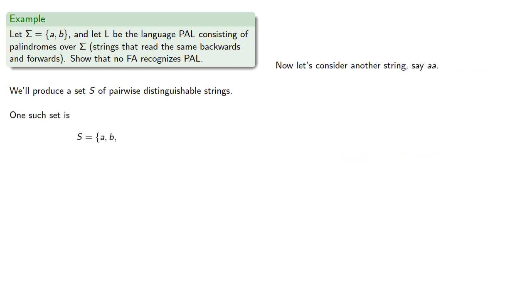Now let's consider another string, say AA. Let's add a string x so that AAx is a palindrome, but Ax and Bx are not. Intuitively, we might complete AA into our palindrome. But we have to be careful.